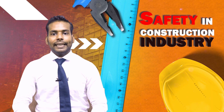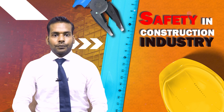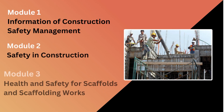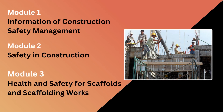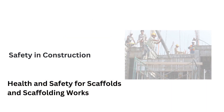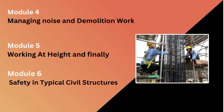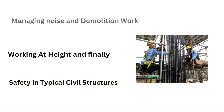Let us discuss each chapter one by one. The course is divided into six chapters. Module one will provide information on construction safety management. Module two covers safety in construction. Module three gives insight into health and safety for scaffolding work. Module four introduces managing noise and demolition work. Module five discusses work at height, and module six provides information about safety in typical civil structures.